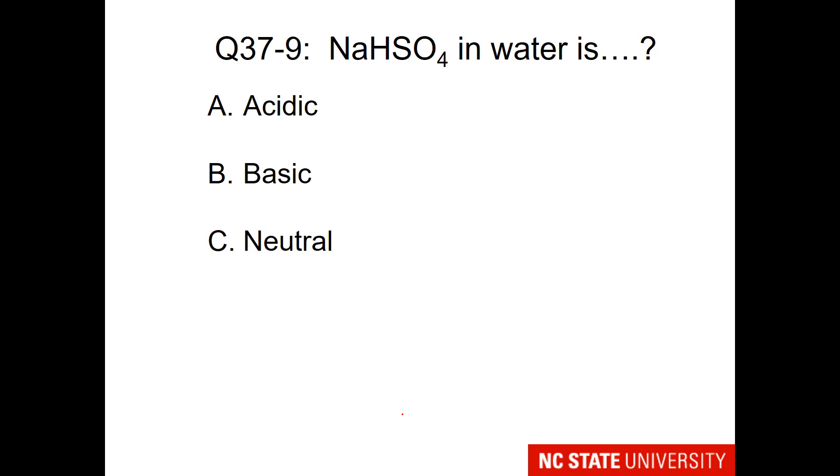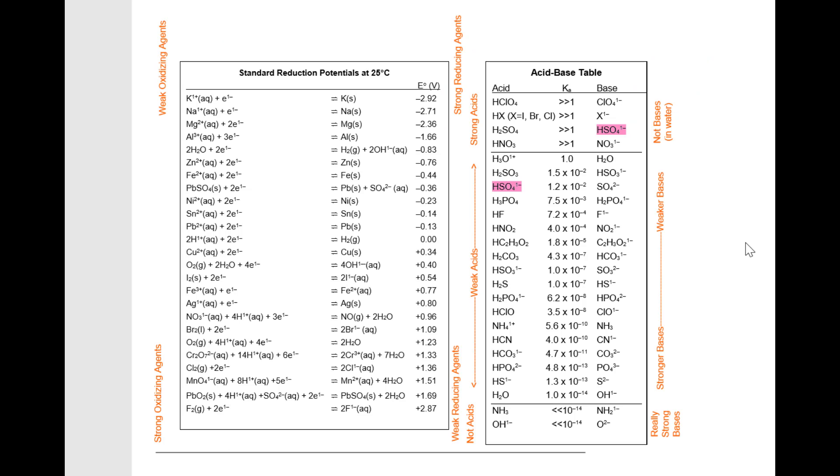How about sodium hydrogen sulfate? This will break up into sodium ion and hydrogen sulfate ion. Let's see where this might be on the acid base table. You will find it in two places, as a weak acid or an extremely weak base.